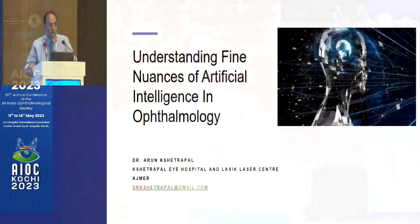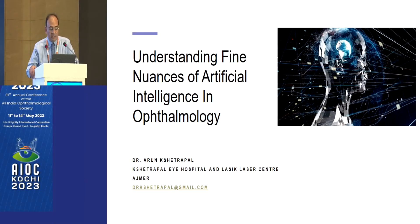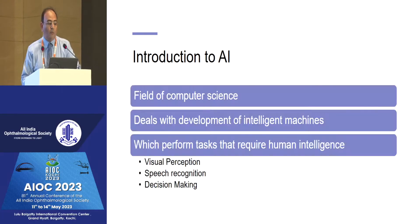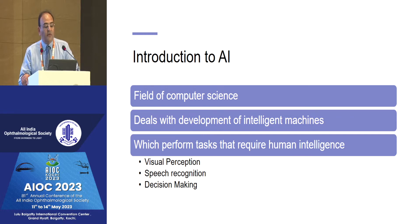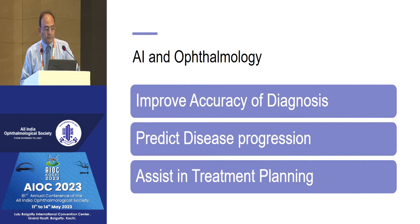Understanding fine nuances of artificial intelligence and its applications in ophthalmology. AI is basically a field of computer science which deals with the development of intelligent machines that perform tasks requiring human intelligence, such as visual perception, speech recognition, and decision making.